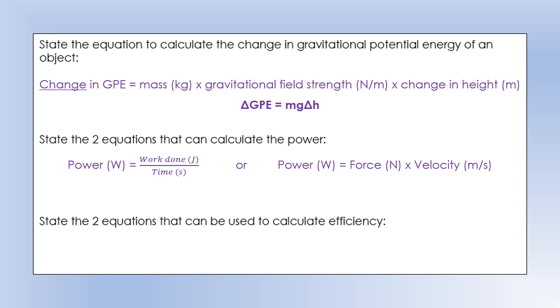State the two equations used to calculate efficiency. We can either do useful work done over the amount of input energy, or we can do useful power over the input power. We multiply them both by 100%, and that will give us an efficiency as a percentage.